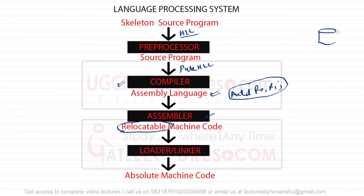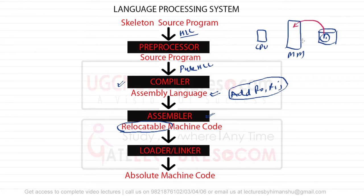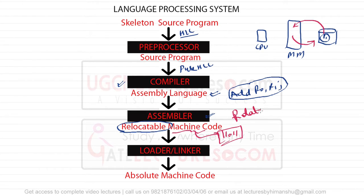Assume there is a main memory, a secondary memory (hard disk), and a CPU. A program resides in secondary memory, and when you run it, you bring it into main memory - you relocate the program from secondary memory to main memory. When you relocate, the addresses of the instructions will change. Machine code is written in binary like `11011`, and relocatable machine code means you can relocate it between secondary and main memory using relative addresses.